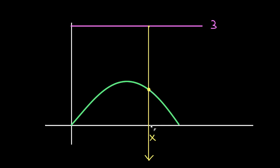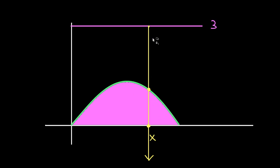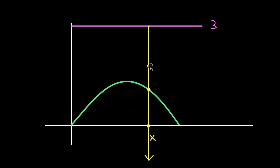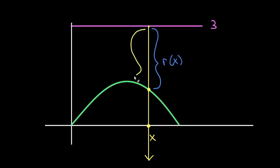When the line first enters the area I mark it, and when it exits I mark that too. We're imagining taking this line and rotating it around y equals 3. This gives us two radii. The inner radius is the smaller segment, closer to the axis of rotation. The outer radius is the entire line from the axis of rotation to where it exits the area. The remaining piece is sine x — the distance from the x-axis out to the function.